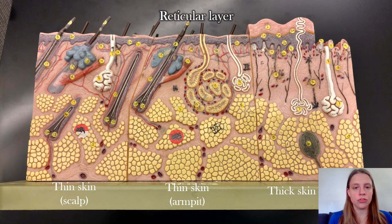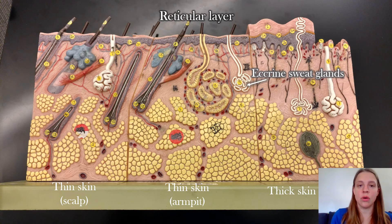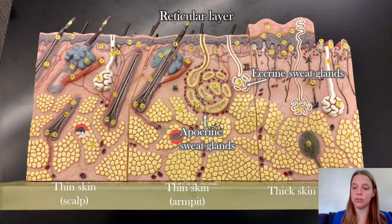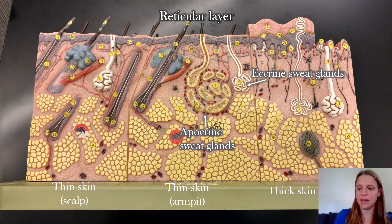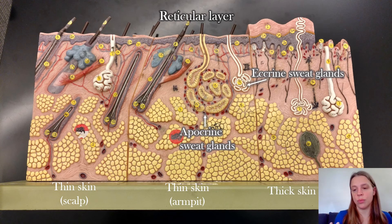There are a lot more structures within the reticular layer — that's where most glands are found in the skin. There are eccrine sweat glands, which produce a very watery substance used for heat regulation. There are also apocrine sweat glands, which produce a fatty substance with proteins in it, providing nutrients for bacteria to break down. These are the sweat glands found in your armpits and genital region, which is why sweat from your armpits smells, whereas forehead sweat doesn't.